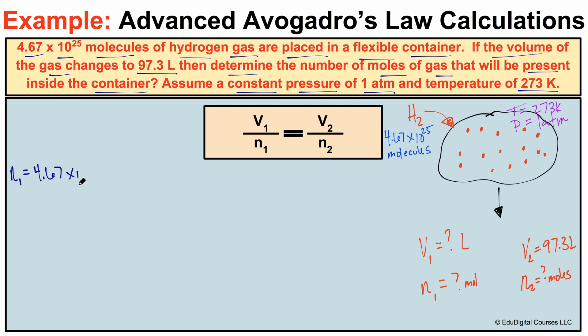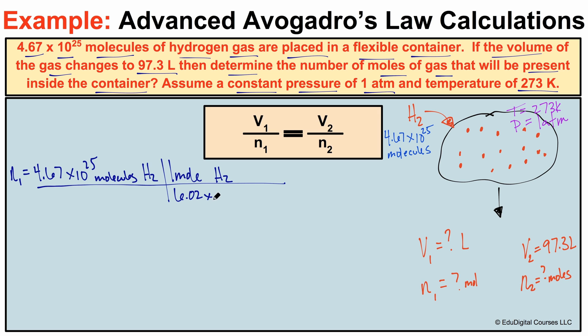We have 4.67 times 10 to the 25th molecules of hydrogen gas. We know that one mole of hydrogen gas is equal to 6.02 times 10 to the 23rd molecules. So when we take 4.67 times 10 to the 25th divided by 6.02 times 10 to the 23rd, we end up with 77.6 — the molecules units cancel, leaving us with 77.6 moles of H₂.